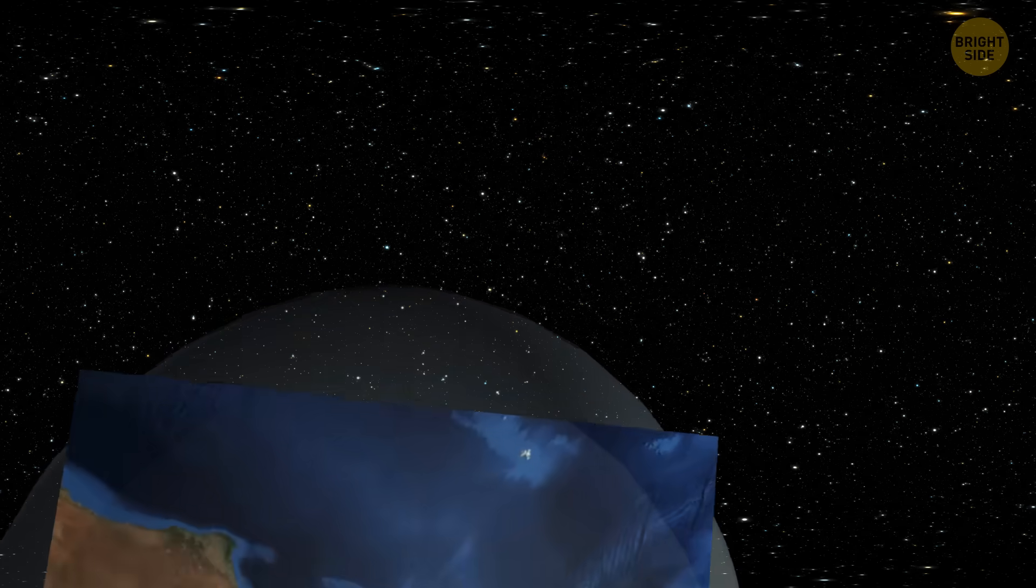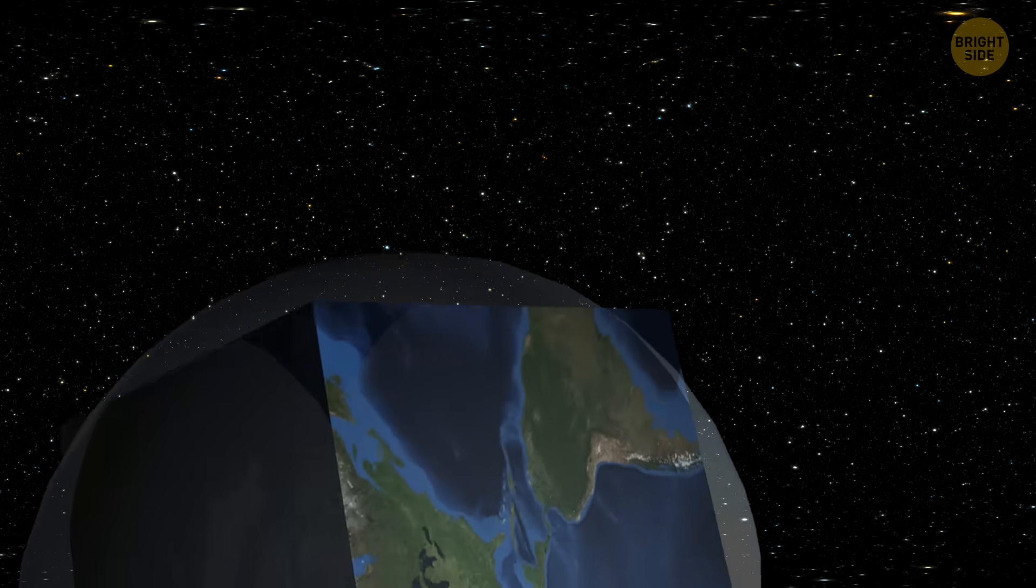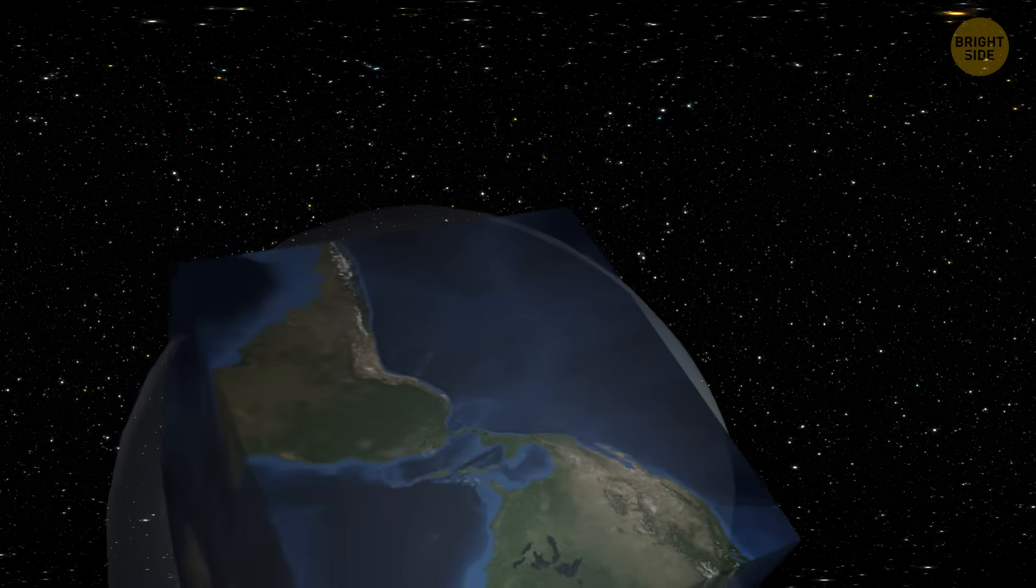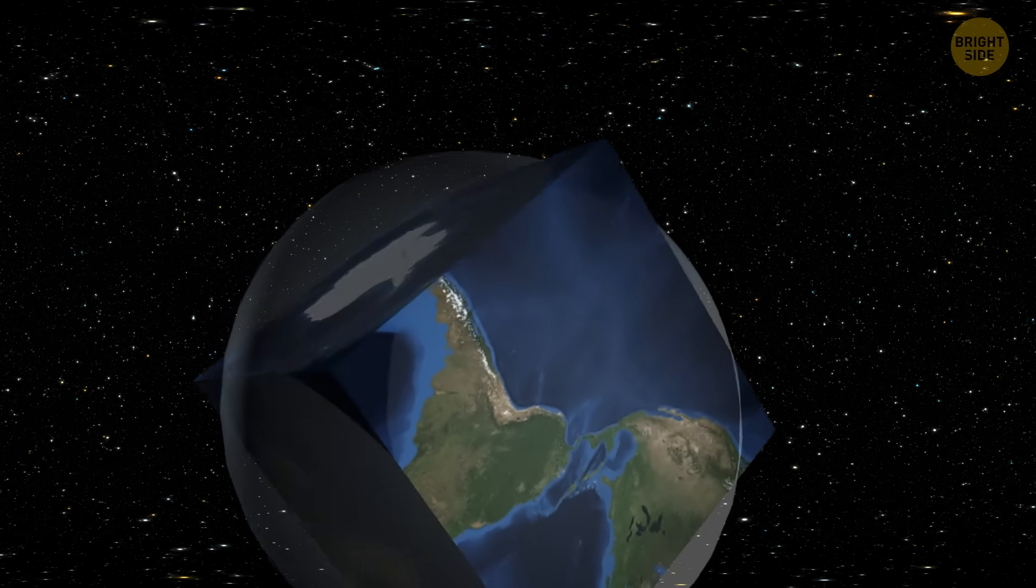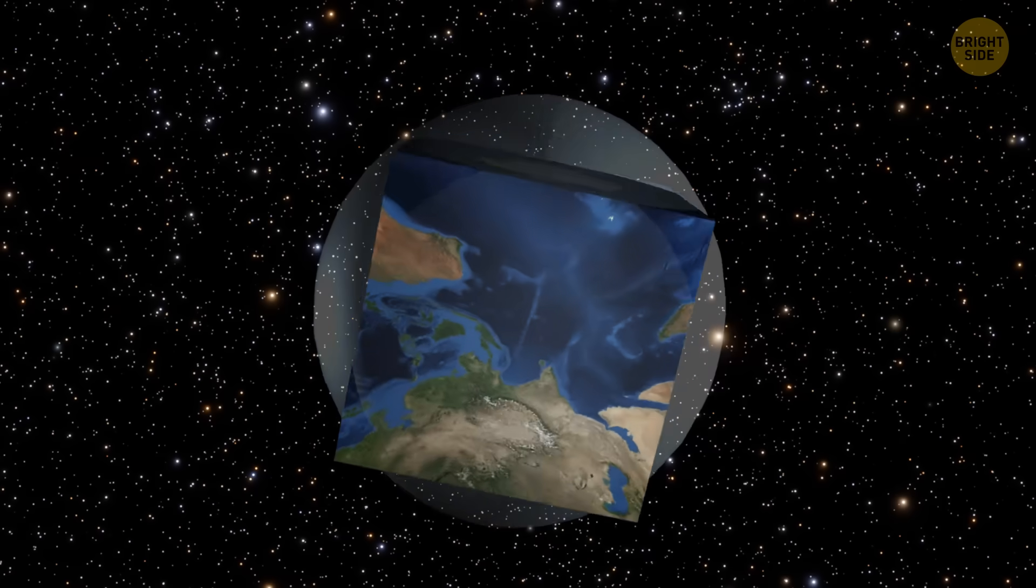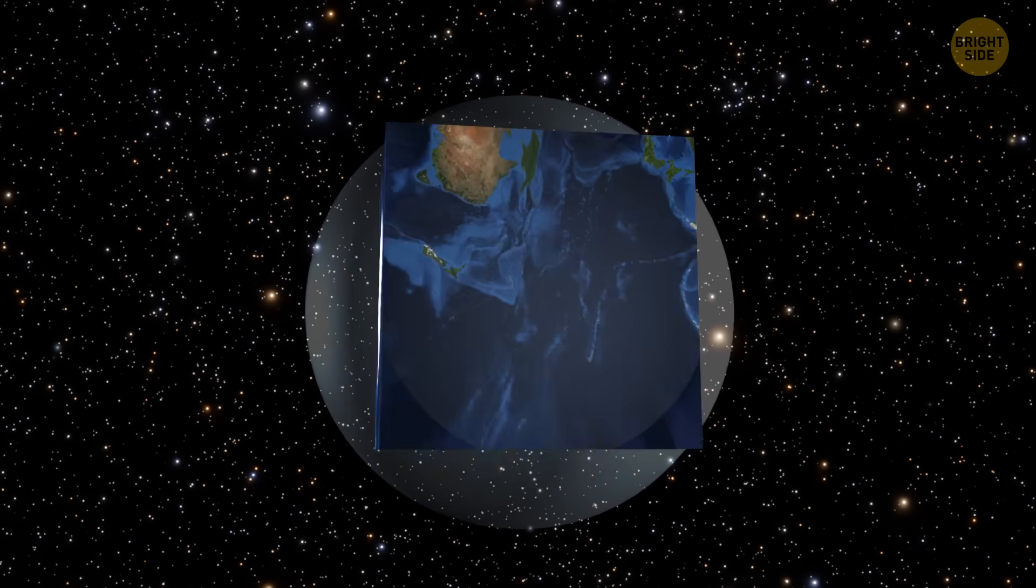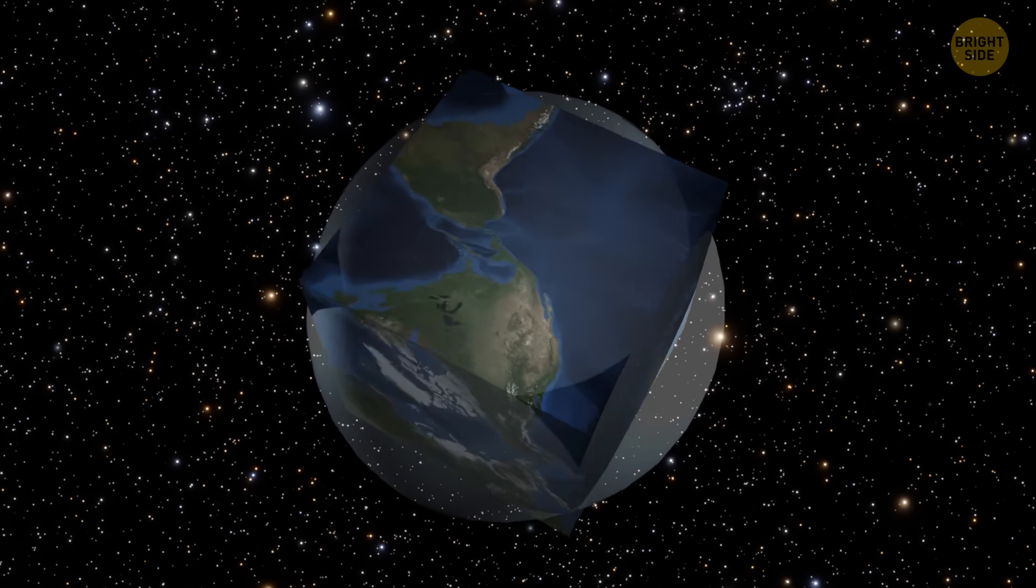But what if we spice things up and skew the distribution of gravity? Well, if you're feeling adventurous and want to live life on the edge, then welcome to the cube Earth. Yay! We'd have six sides now, but don't get too excited. None of them would be any fun.